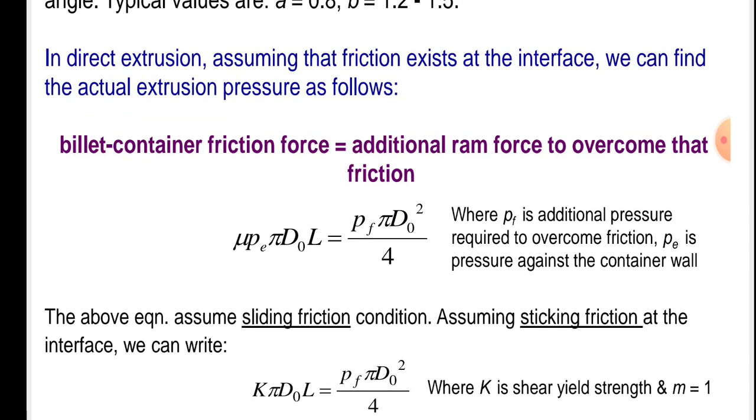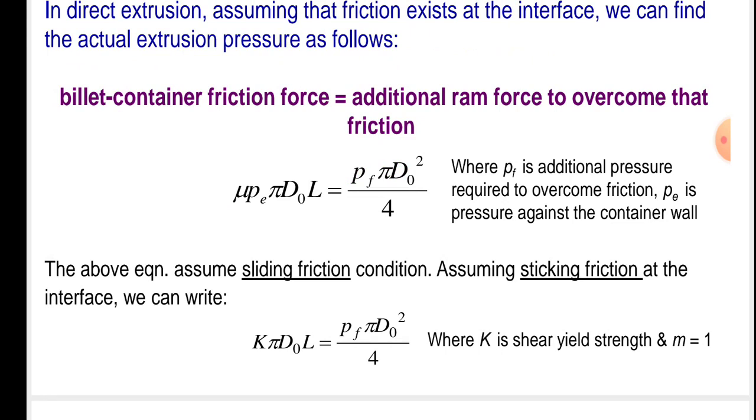Mu times pi D0 L equals pf times pi D0 squared upon 4, where pf is additional pressure required to overcome the friction, p is pressure against the container wall. The above equation assumes sliding friction condition. Assuming sticking friction at the interface we can write K pi D0 L equals pf pi D0 squared upon 4, where K is shear yield strength and m equals 1.